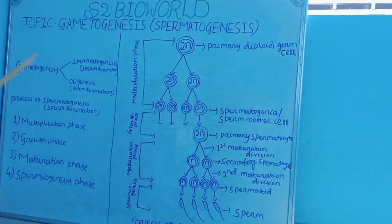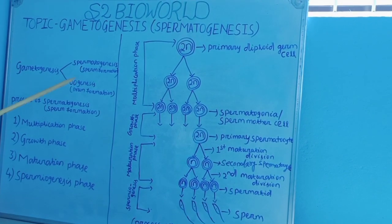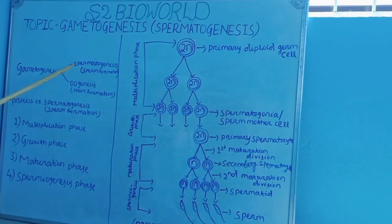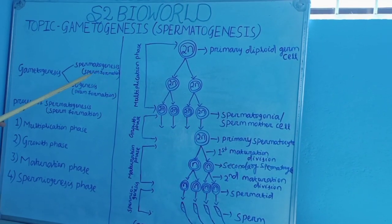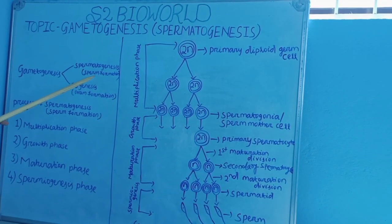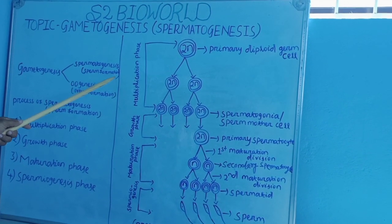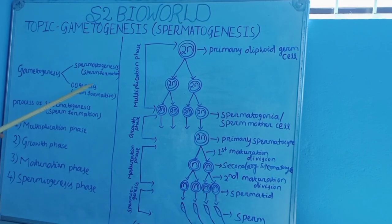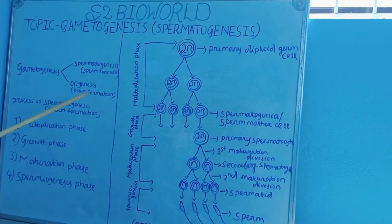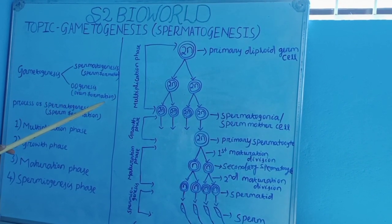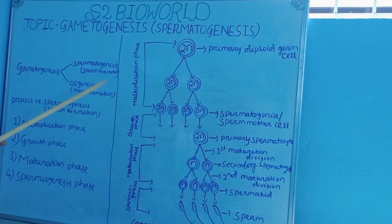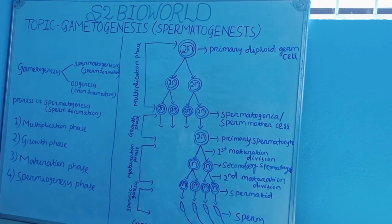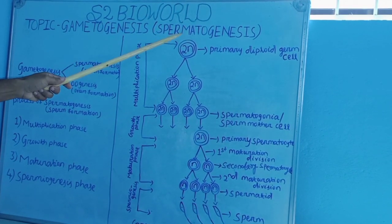Gametogenesis mainly consists of two types: Spermatogenesis, which is involved in sperm formation, and Oogenesis, which is involved in ovum formation. Today the topic is Spermatogenesis.